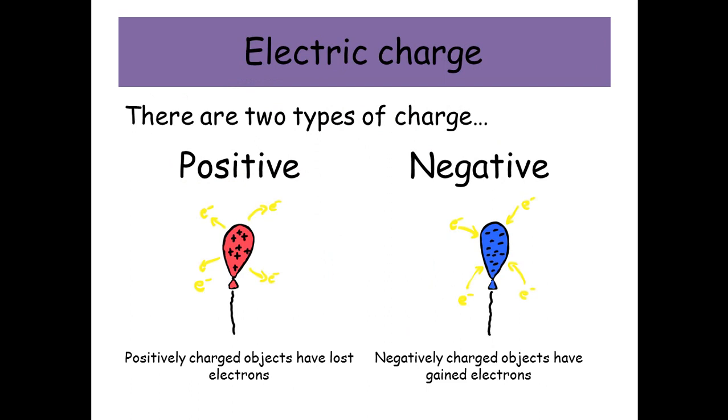Positively charged objects have lost electrons. Negatively charged objects have gained electrons because electrons have a negative charge. So if you gain something that's negatively charged, the object itself becomes negatively charged. And if you remove something that's negatively charged from something that's neutral, you leave a positive charge behind.